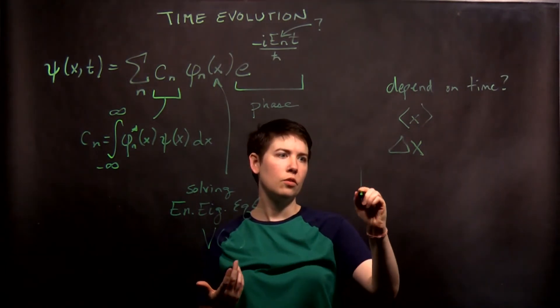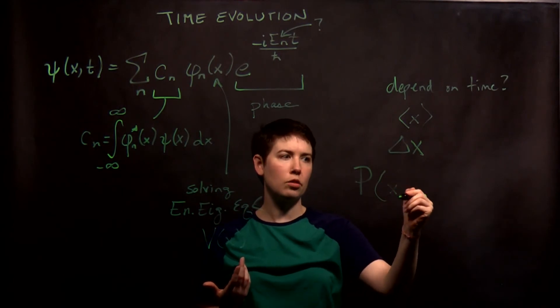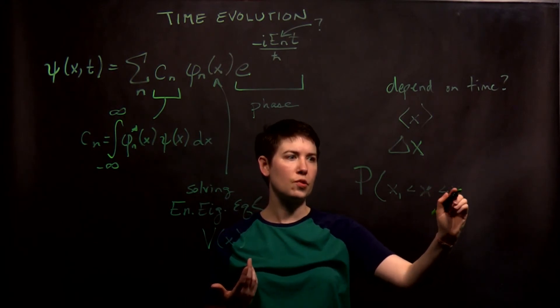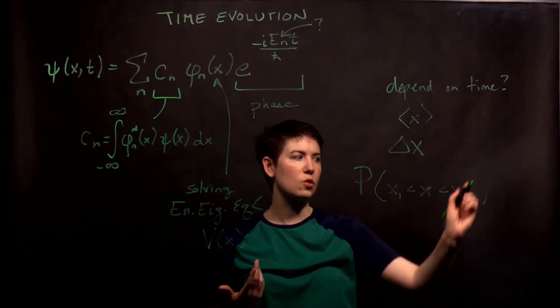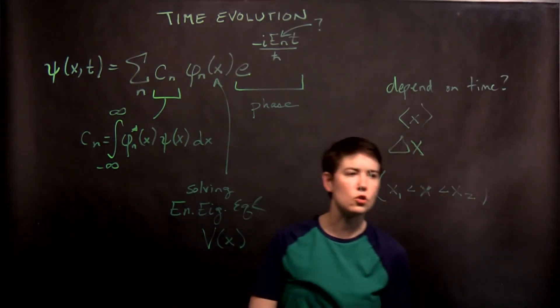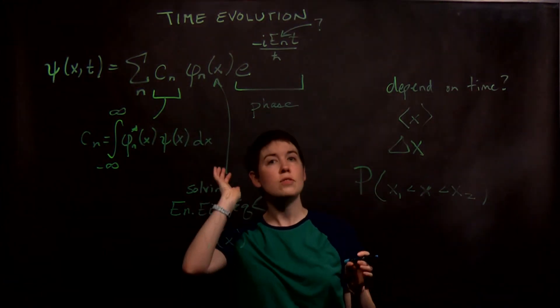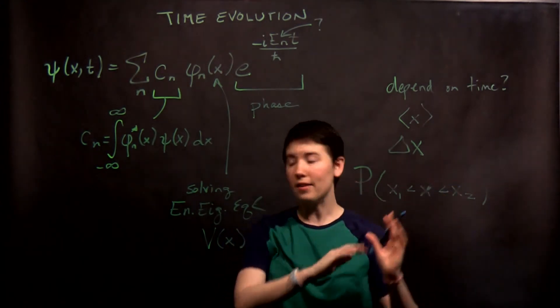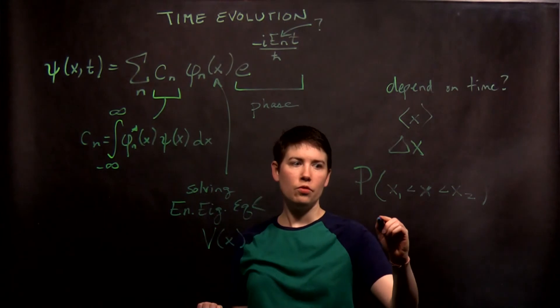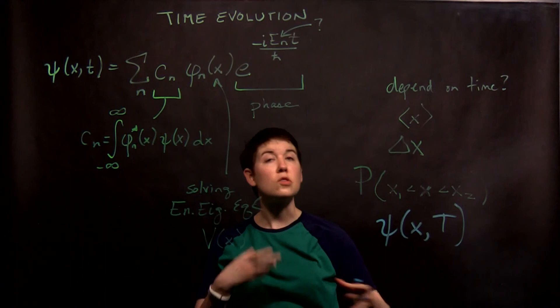The expectation value of position will depend on time. The uncertainty in position is going to change with time. The probability of finding my particle between two specific values of x. And remember that we can't ever say the probability of finding a very specific value of x. We can just do a range. But this probability, for instance, of what's the probability of finding it in the left half of the well? Well that's going to evolve in time.